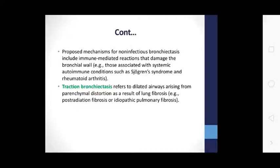The mechanism of non-infectious bronchiectasis includes immune-mediated reactions that damage the bronchial wall, such as those associated with autoimmune conditions like Sjögren's syndrome and rheumatoid arthritis. Traction bronchiectasis refers to dilation of airways arising from parenchymal distortion as a result of lung fibrosis, for example post-radiation fibrosis or idiopathic pulmonary fibrosis.